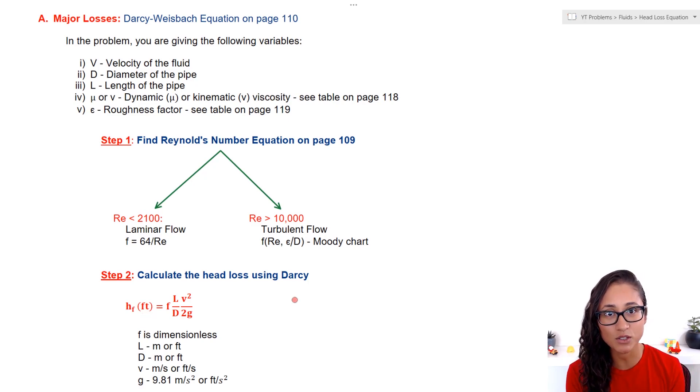Now, let's take a look at the case when Reynolds number is greater than 10,000. We have turbulent flow. And to calculate the friction factor, we use Moody chart. To use Moody chart, we need to first get Reynolds number, which we already calculated at that point, and we need to do the roughness factor divided by the diameter of the pipe.